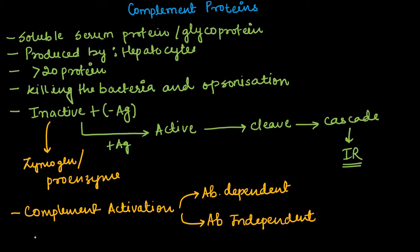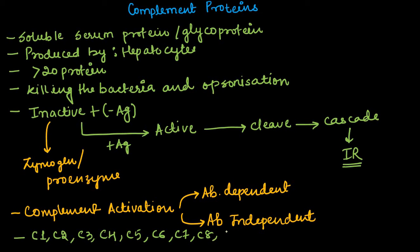Regarding complement protein involvement, there is a series of complement proteins starting from C1, C2, C3, C4, C5, C6, C7, C8, and C9. From C1 to C9, there is a presence of complement proteins which help in the eradication or removal of an antigen. Now let's talk about the complement protein action — I will be explaining it in the form of a flow diagram, which will be better to understand.